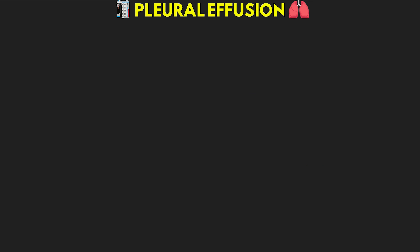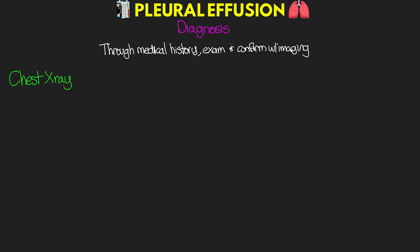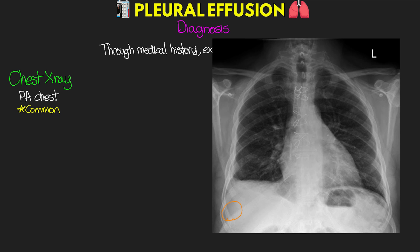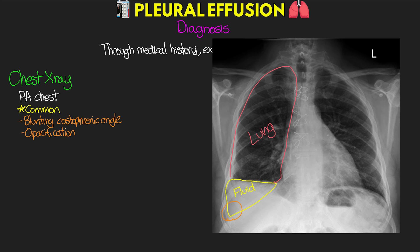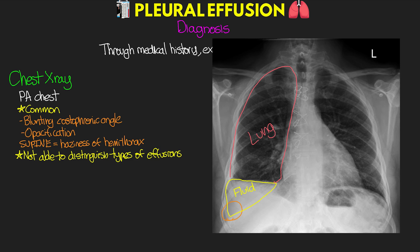Pleural effusion is typically diagnosed through a combination of medical history, physical exam, and imaging. The posterior-anterior chest X-ray is commonly used to diagnose pleural effusion. On X-ray you'll see blunting of the costophrenic angle and opacification of the affected hemithorax — very similar in appearance to a hemothorax, meaning you cannot distinguish between the two on X-ray alone. In supine patients, fluid can layer in the pleural space causing a general haziness of one hemithorax compared to the other.